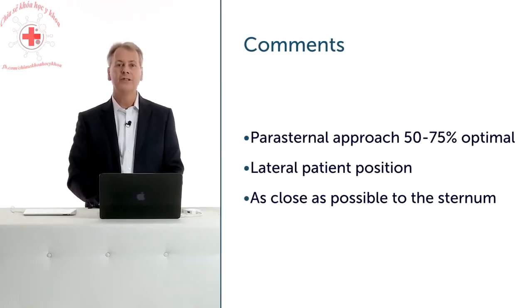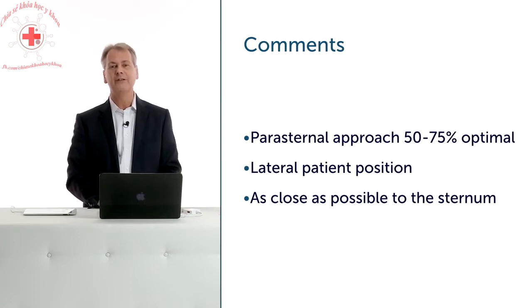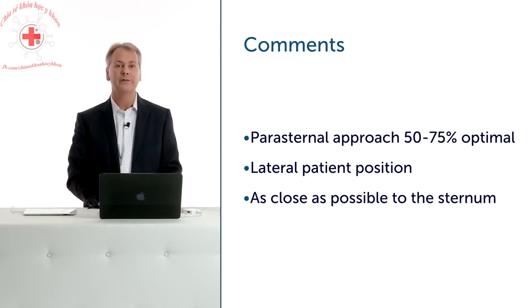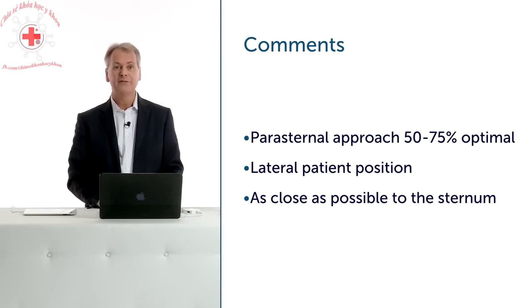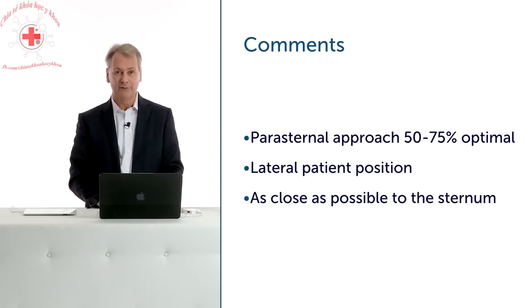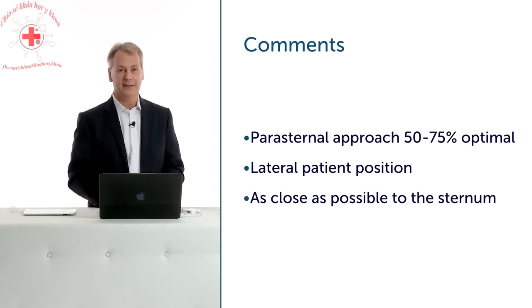A few specific points: the parasternal approach doesn't work all the time. It works in somewhere in the range of 50 to 75% of patients for optimal image quality, though if you know how to image it's probably still more towards 80 or even 85%. Use the left lateral position because otherwise you will have less good image quality in most patients, but this does not mean you cannot get the parasternal window even if the patient is lying on his back. Always try to stay as close as possible to the sternum because there you usually have less lung tissue.